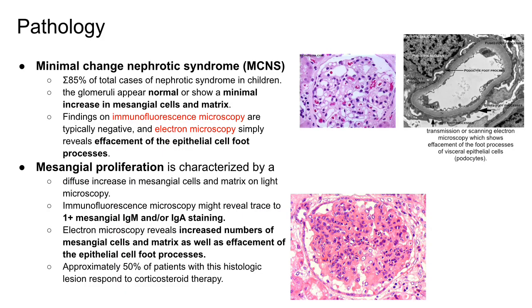Minimal change nephrotic syndrome makes up 85% of the total cases of nephrotic syndrome in children. On light microscopy, the glomeruli appear normal or show a minimal increase in mesangial cells and matrix. Immunofluorescence findings are typically negative, and electron microscopy reveals effacement of the epithelial cell foot processes.